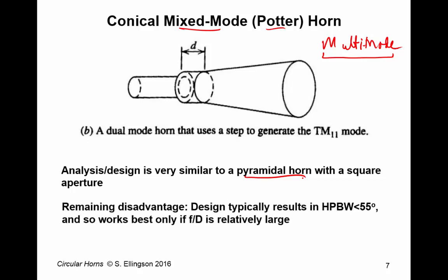There is a remaining disadvantage, I should point out, in the Potter horn, and that's the design typically results in a half-power beam width, which is less than about 55 degrees.